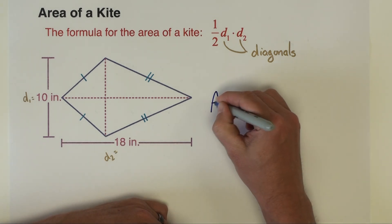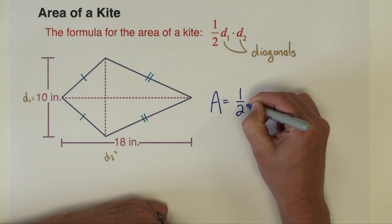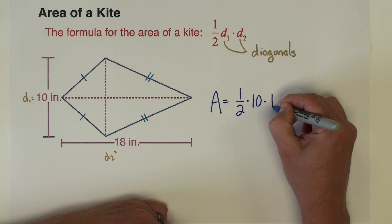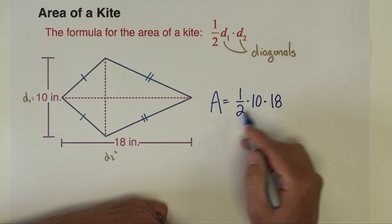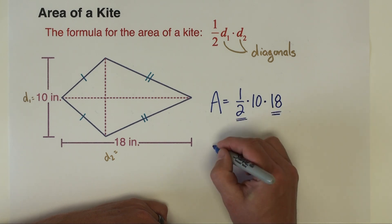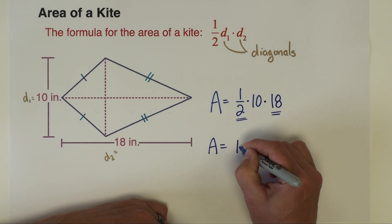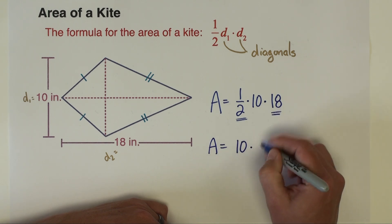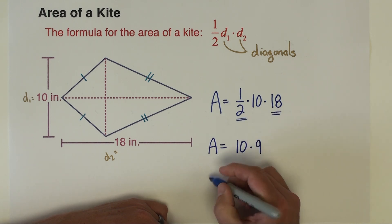The area of this kite can be found by doing one half times 10 times 18. I'm going to save the 10 because I can multiply by 10 very easily, so I'm going to multiply half times 18. Half times 18 is 9, times 10, so the area is going to be 90.